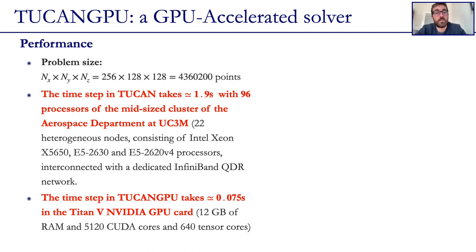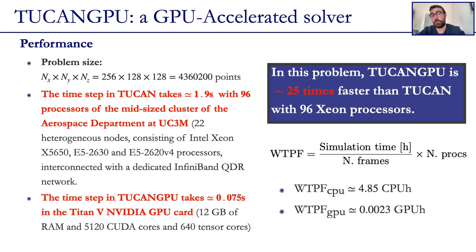Talking a little bit about performance, basically we have quantified it in the validation case that we have just shown, and whose size is roughly 4 million points. In order to quantify it properly, we have actually measured the simulation time of both the CPU and the GPU codes. We have identified that for this problem, Tukan GPU is roughly 25 times faster than Tukan with 96 processors, which is a huge increase in performance.